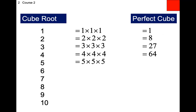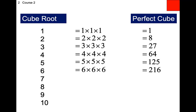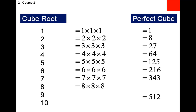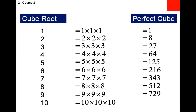Five times five times five is 125 — our first five perfect cubes are already over 100. For perfect squares it took 10 numbers to get over 100; we're already past 100 at 5. Six times six times six is 216. Seven times seven times seven is 343. Eight times eight times eight is 512. Nine times nine times nine is 729. Ten times ten times ten is 1,000. Those are the first 10 perfect cubes.